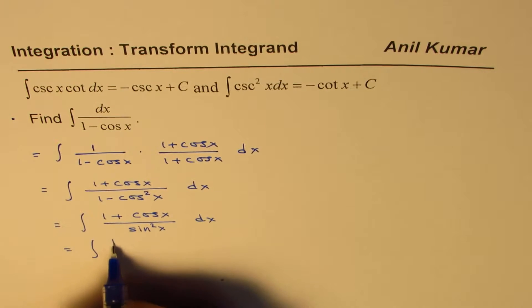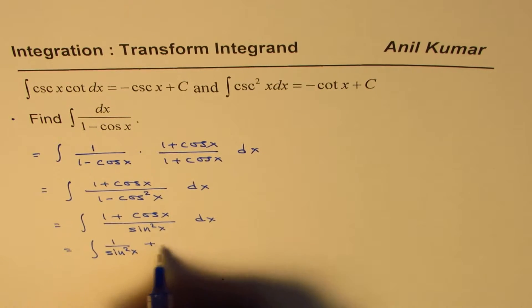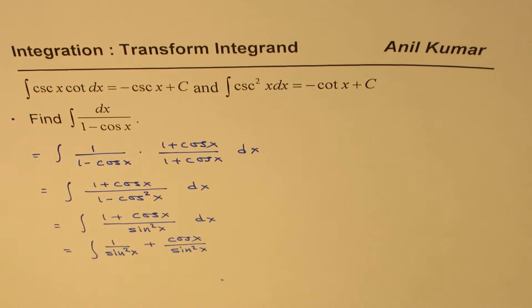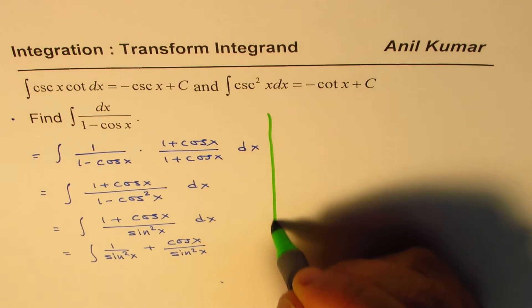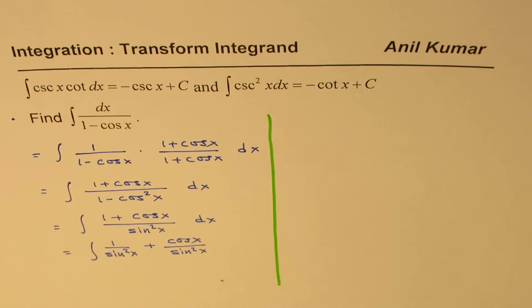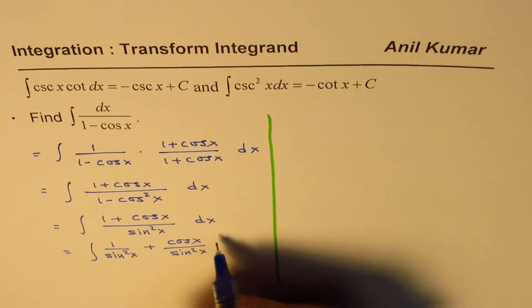Now this could be written as 1 over sine square x plus cos x over sine square x. Now that is a standard form. From the table, you can find integral of these. So let me take them on the right side.